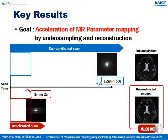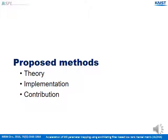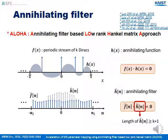My goal is acceleration of MR parameter mapping by undersampling and reconstruction by ALOHA. I'll briefly explain the background and detail principles of ALOHA first. Let's start with the annihilating filter. Assume that there is a periodic stream of K Diracs, F(x). Then there exists a corresponding annihilating function H(x), which is periodic and makes F times H go to zero. In the Fourier domain, there is a discrete convolution relationship between F[n] and H[n], where H[n] is called the annihilating filter.